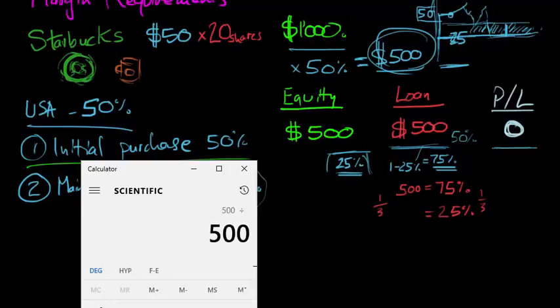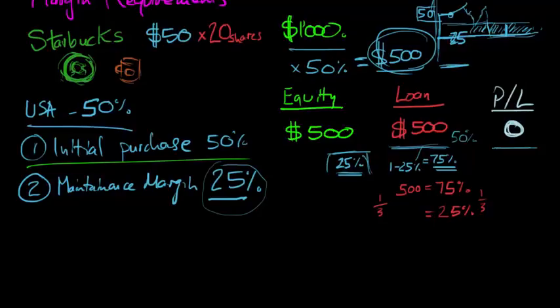Similarly, 500 divided by 3 equals $166.67. So that would leave the equity at this point at $166.67. That's the minimum equity balance you'll be allowed to have. And at that point, we'll still be left with $500 of loan.